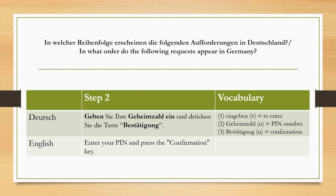Step two: 'Geben Sie Ihre Geheimzahl ein und drücken Sie die Taste Bestätigung.' 'Geheimzahl' is basically your PIN number — you have to enter your PIN. 'Geheimzahl' is a noun, written with a capital letter. The verb is 'eingeben,' another separable verb, so 'geben' is conjugated: 'geben Sie Ihre Geheimzahl ein.'